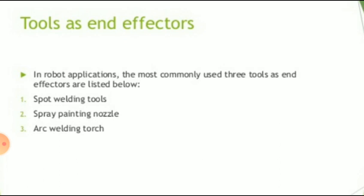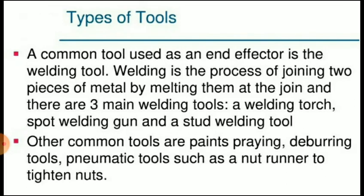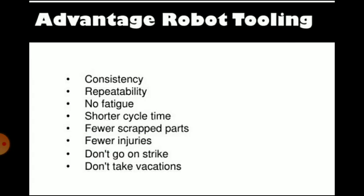Tools used as end effectors include spot welding tools, spray painting nozzles, and arc welding torches attached directly to the robotic arm. The common tool used as an end effector is the welding tool — welding joins two pieces of metal by melting them at the joint. The three main welding tools are the welding torch, spot welding gun, and stud welding tool. Other common tools are paint spraying, deburring tools, and pneumatic tools such as a nut runner. Advantages of robot tooling include consistency, repeatability, no fatigue, shorter cycle time, fewer scrap parts, fewer injuries, and robots don't go on strike or take vacations.